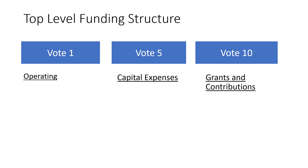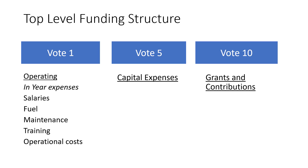Vote 1 holds all of the operating funds. Vote 5 has funds to be spent on capital expenses, and Vote 10 funds grants and contributions. Operating expenses are in-year expenses. This would fund things like salaries, fuel, maintenance, training, and operational costs. These are all things that are expected to be used up in that one year.